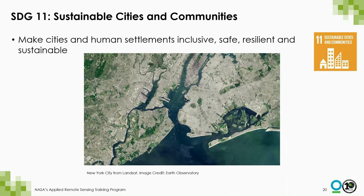SDG 11 is focused on sustainable cities. Today, more than half the world's population lives in cities, and by 2030, six in ten people are projected to be urban dwellers. Despite planning challenges, cities offer more efficient economies of scale for provision of goods, services, and transportation, making them important for driving sustainable development. With satellite imagery, we can map cities and their growth and expansion, and also monitor air quality. For this training, we'll focus on mapping urban areas.